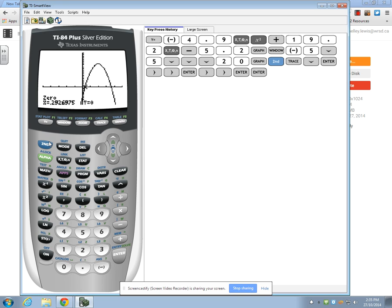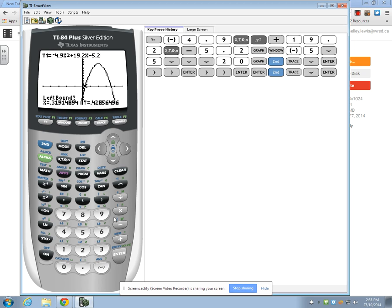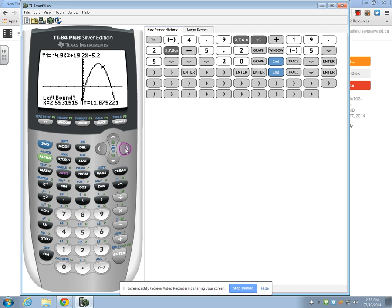We have to redo the process. So, we're going to hit second and trace again and select number 2, zero. This time, when it asks us for the left bound of the x-intercept, we have to be on the left side of the other x-intercept. So, we use our right arrow key and we scroll over until our cursor is just to the left of that x-intercept.